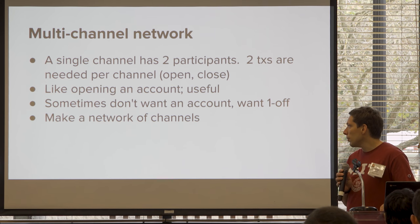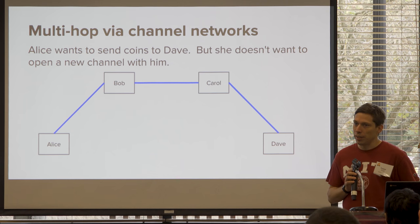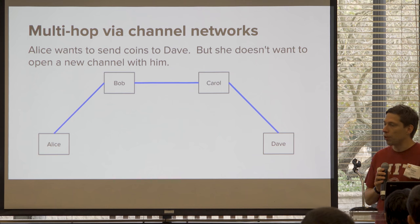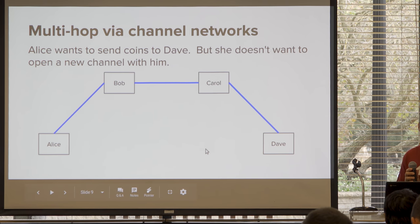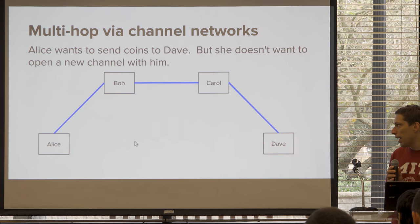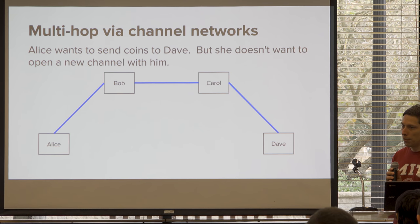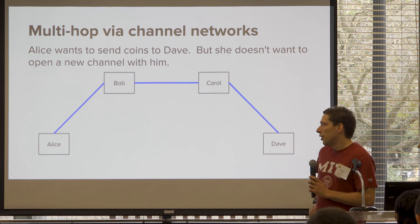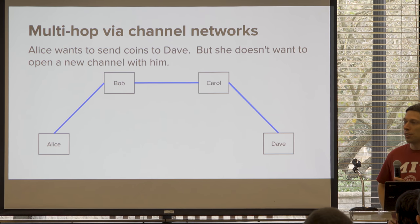The idea of multi-hop channels: Alice has a channel with Bob, Bob has a channel with Carol, Carol has a channel with Dave. Alice wants to send money to Dave. Alice could open a channel with Dave directly, or use regular on-chain Bitcoin transactions. But if there's a path, Alice can do it without sending any data to the Bitcoin network at all. This is optimizing to avoid Bitcoin blockchain fees — instead send it to Bob, who sends it to Carol, who sends it to Dave. But do it in a way that's trustless. You could trust people, but Bob can just receive the coin from Alice and keep it.